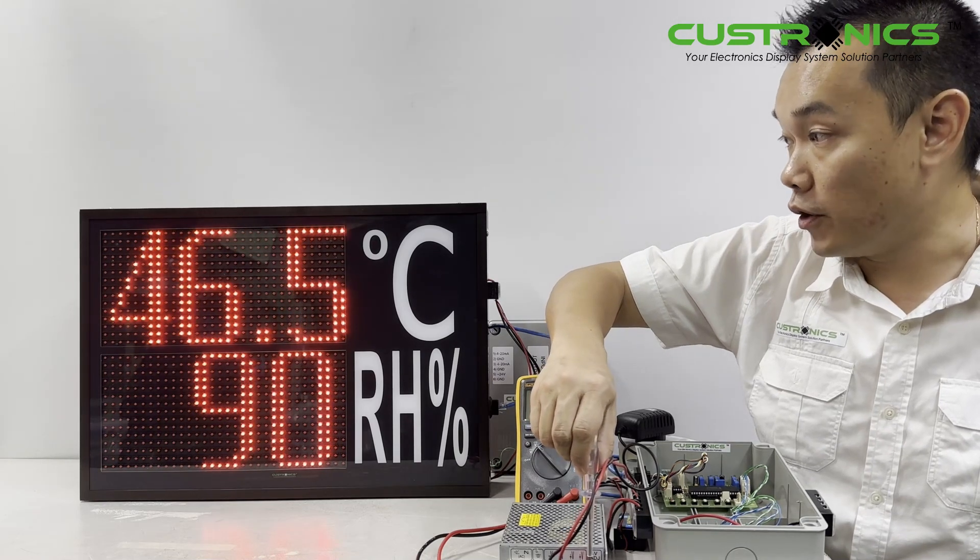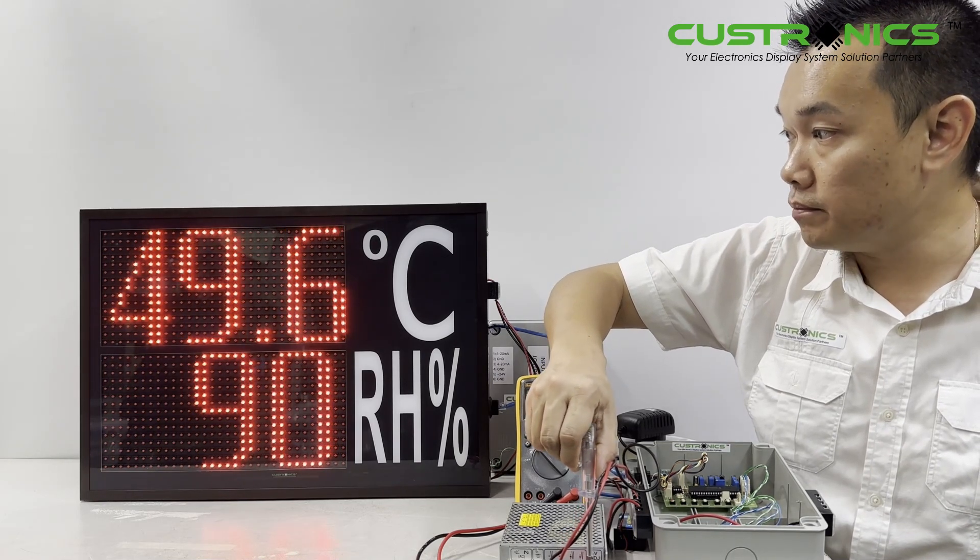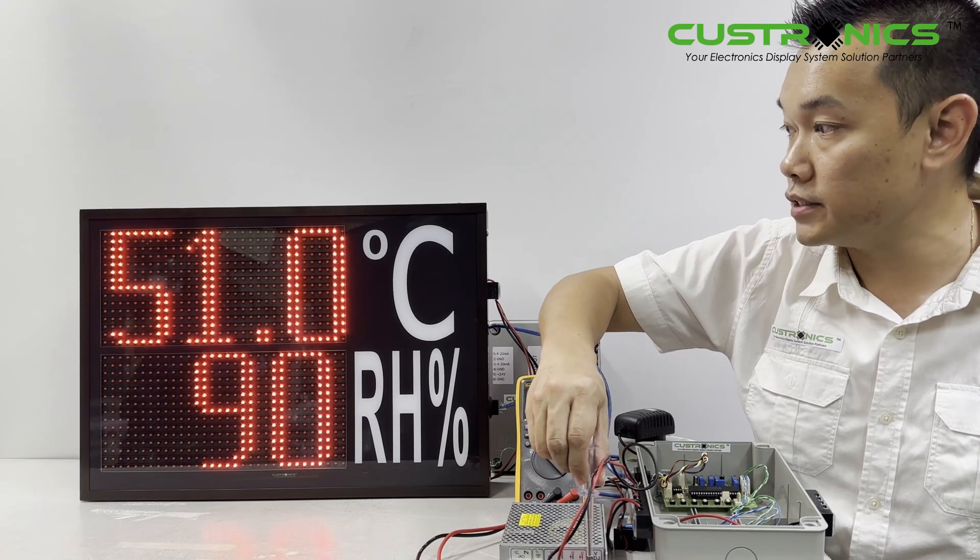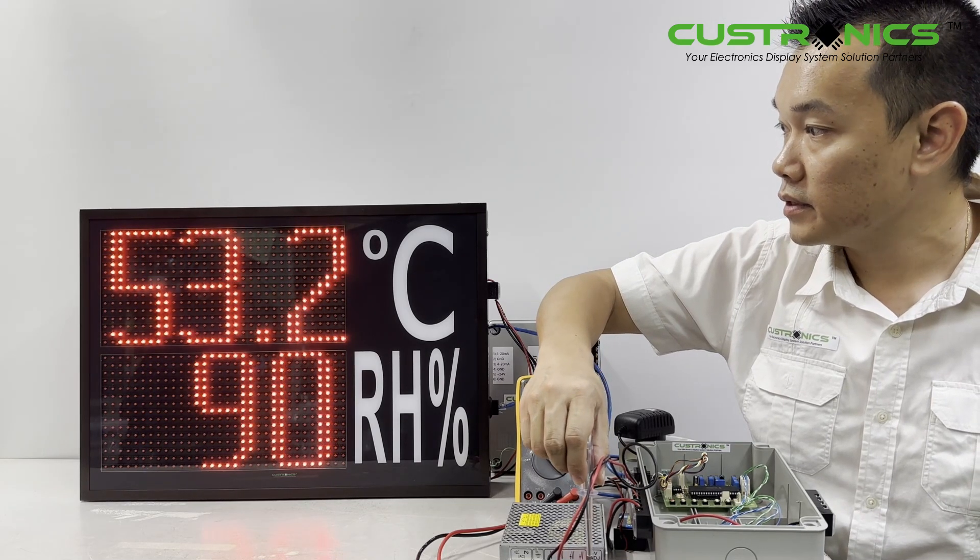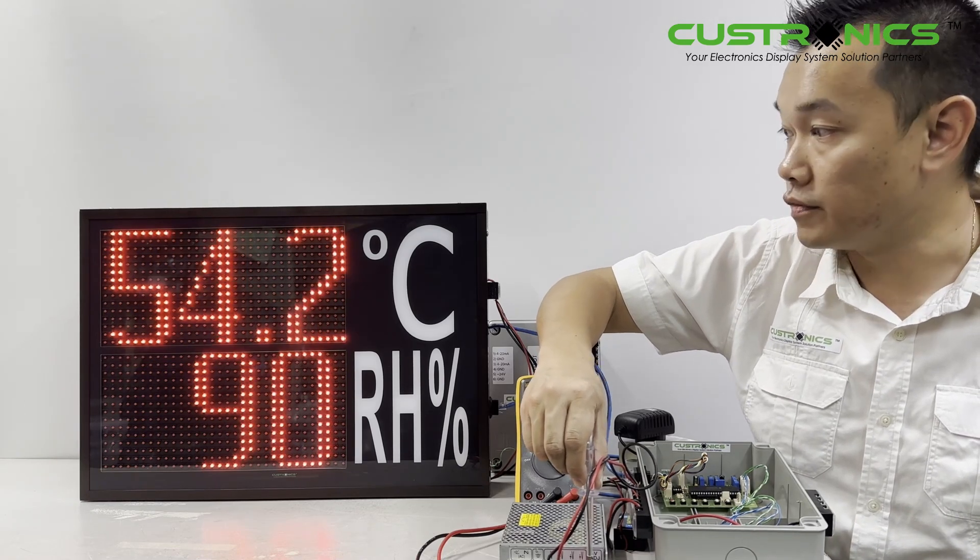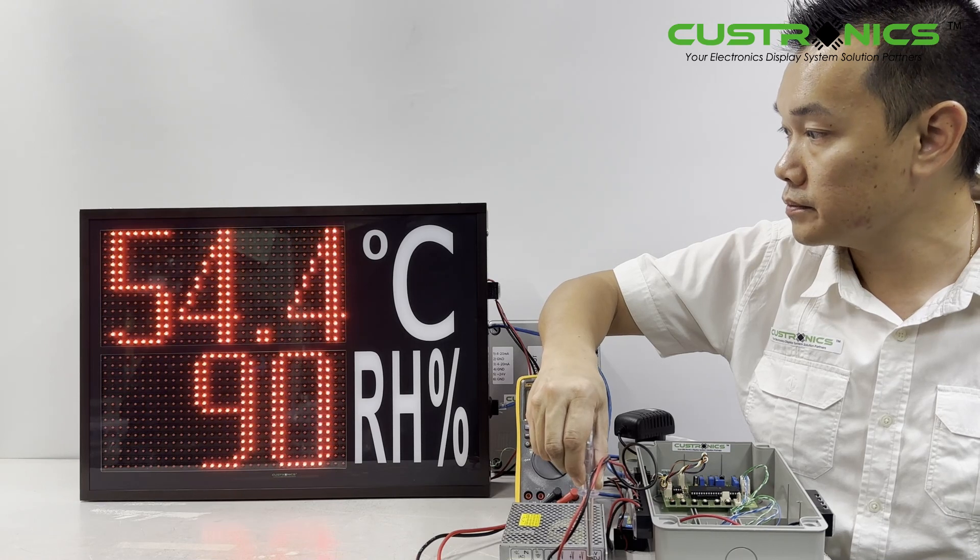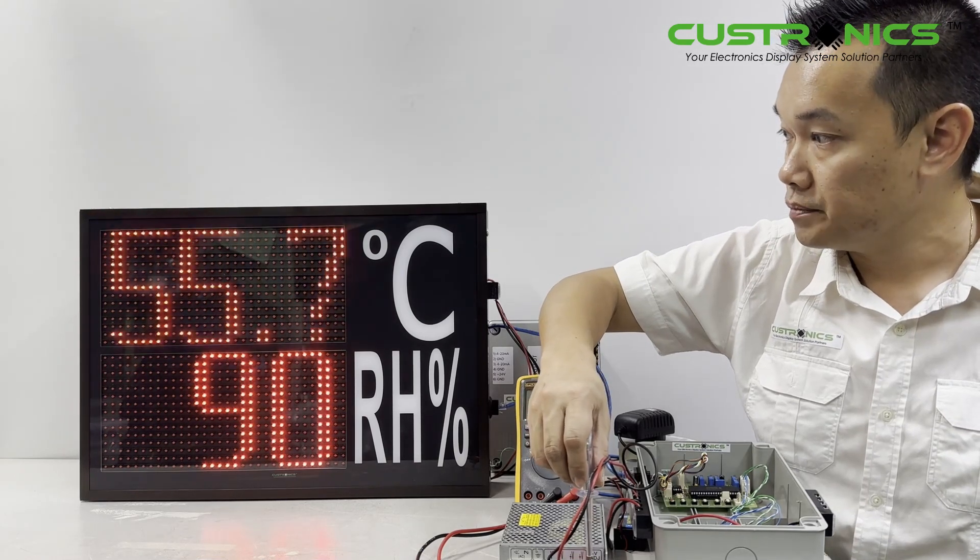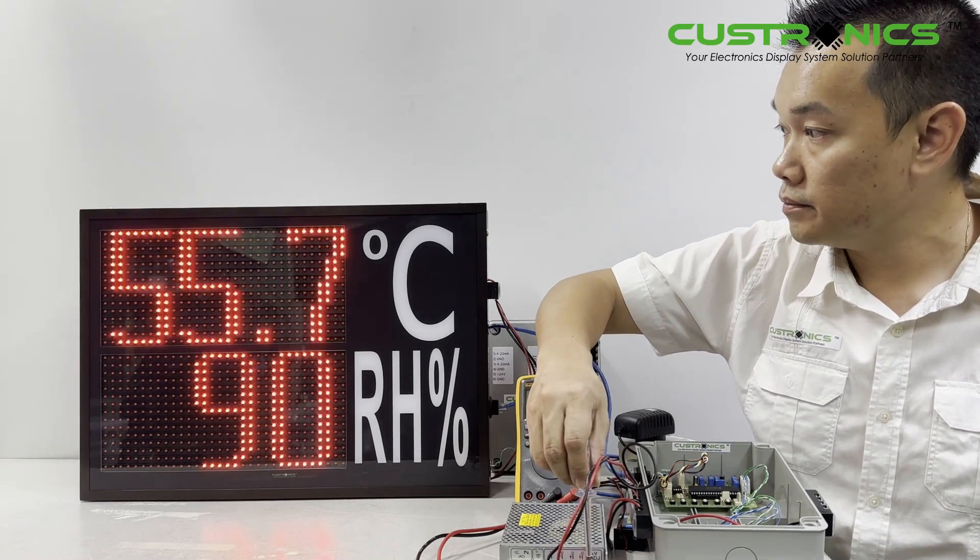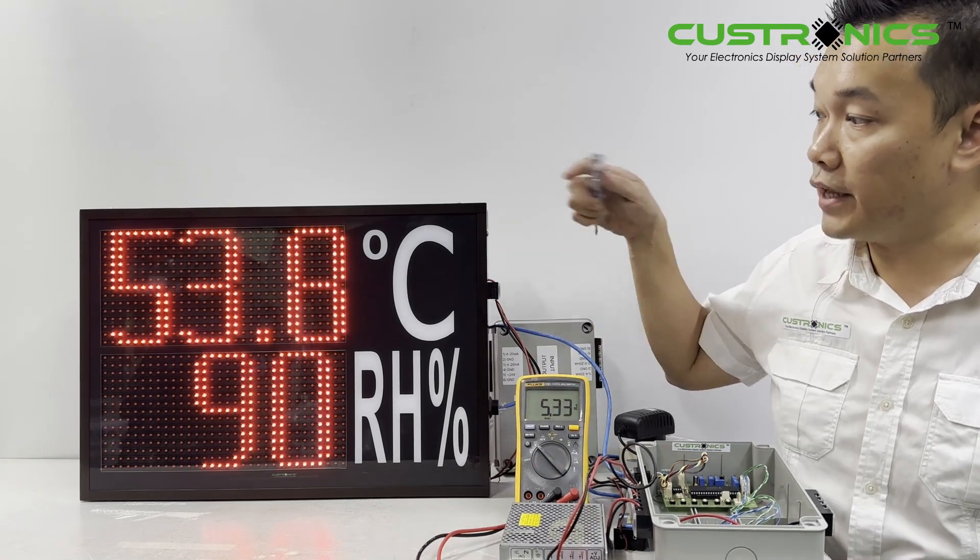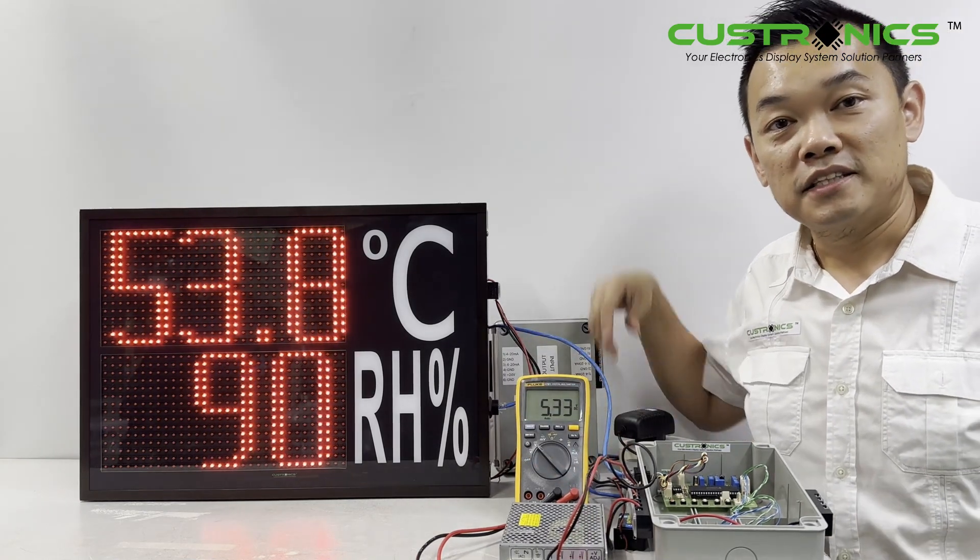My maximum is 55.2, so let me go up and slowly increase. At this moment, we're still at 54.2. You see, when it reaches 55.7, it will blink. When I lower it down to 54, 53.8, it won't blink. This is how it works.